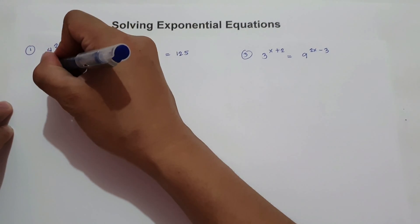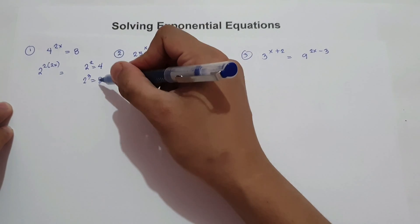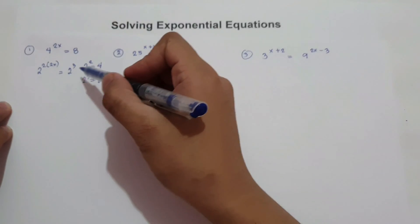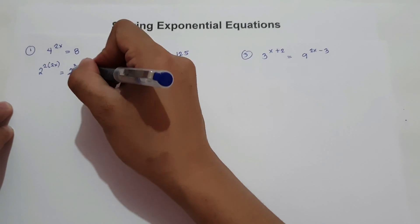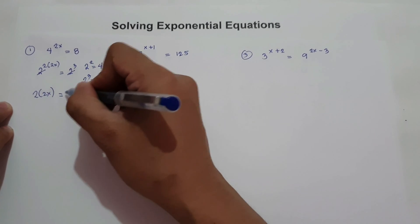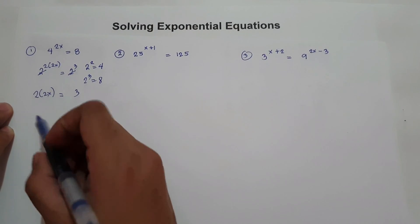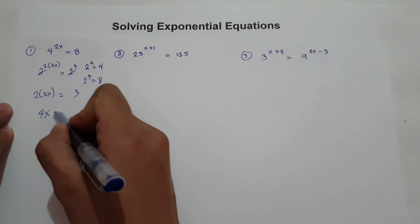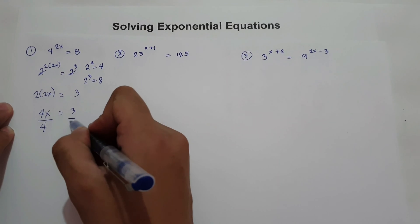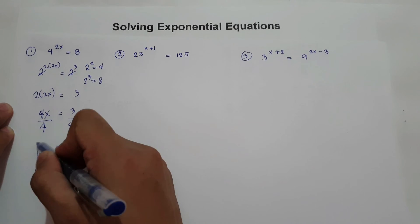So 4, that is 2 raised to 2, times 2x equals 8, that is 2 raised to 3. Since we have the same base, let us cancel the base and we have 2 times 2x equals 3. To find the value of x, divide both sides by 4. So x is 3 over 4.